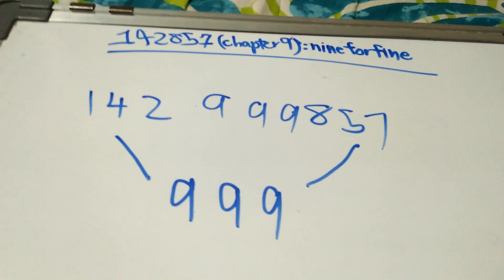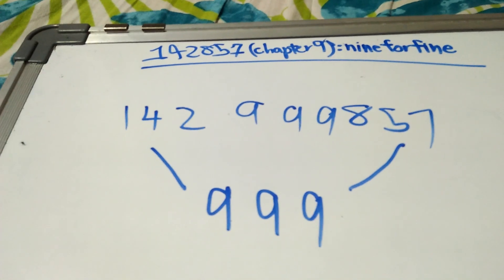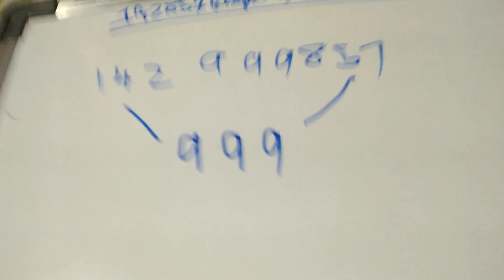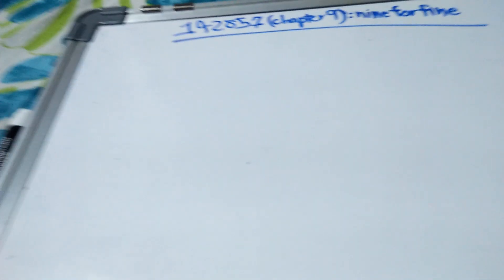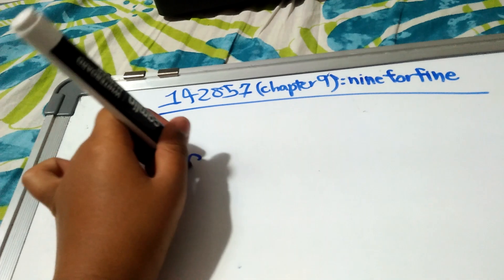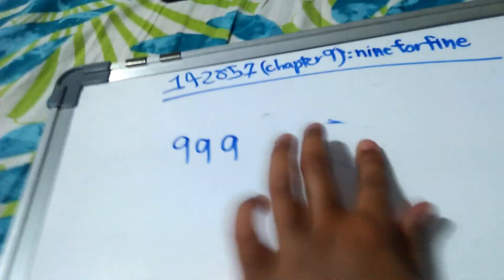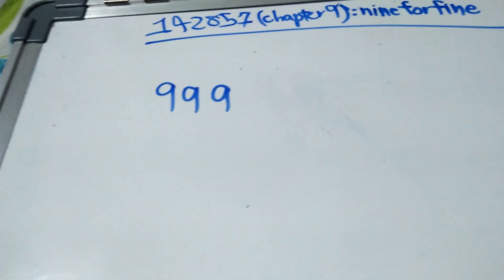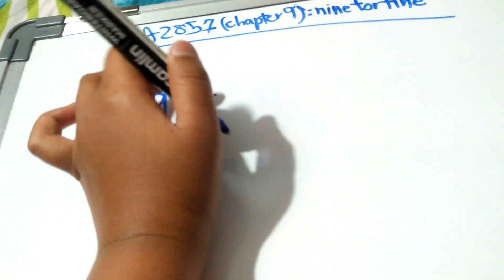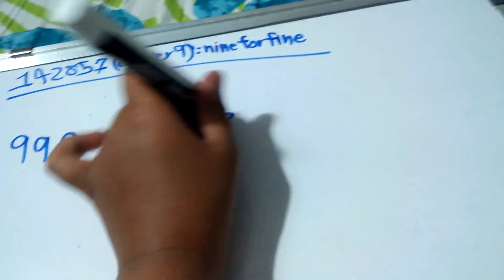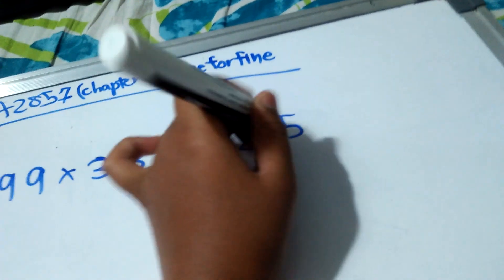The nines are very special — they can show anything here. Instead of 999,999 we can just use 999 itself. Now, suppose I took 999 and multiplied it by 343 — the answer becomes 342,657.